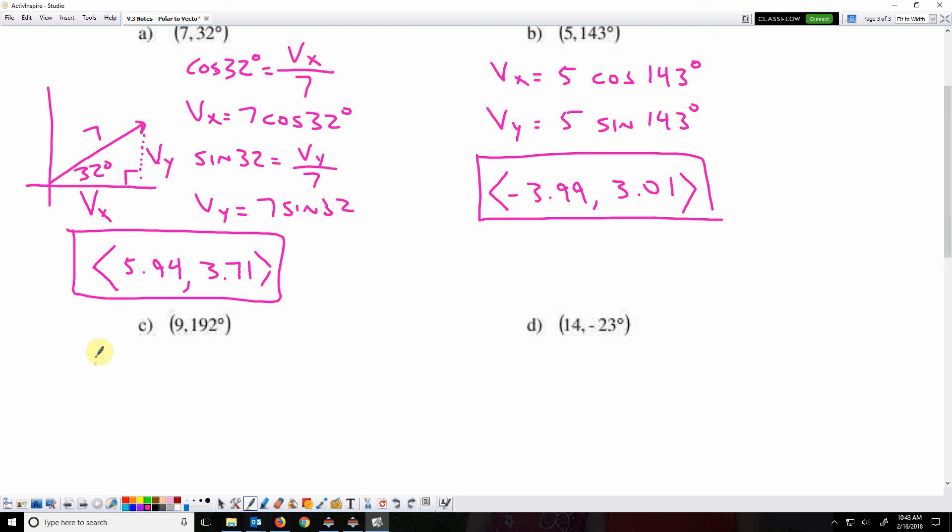So what you should have done is the vector's x component is 9 cosine 192, and the vector's y component is 9 sine 192.